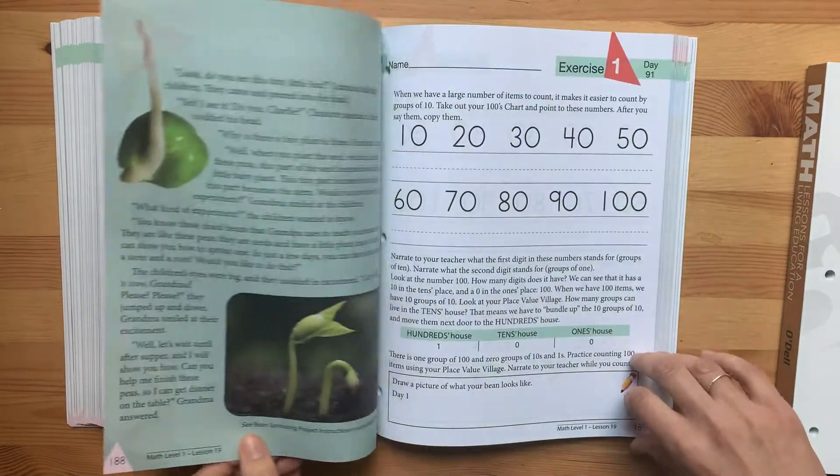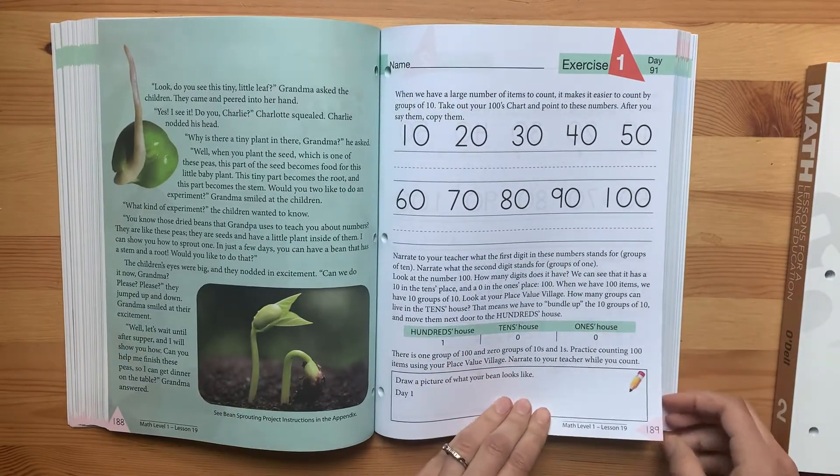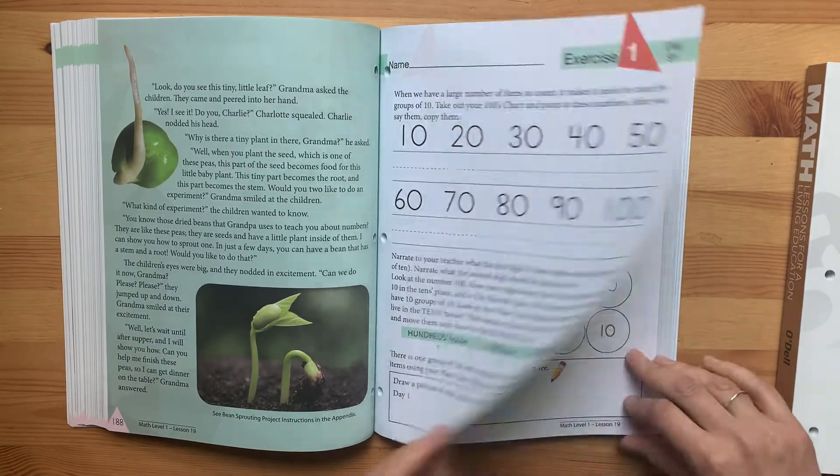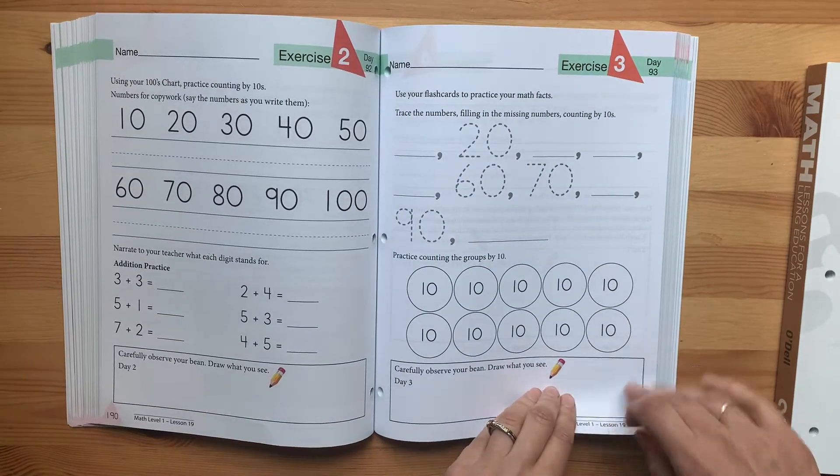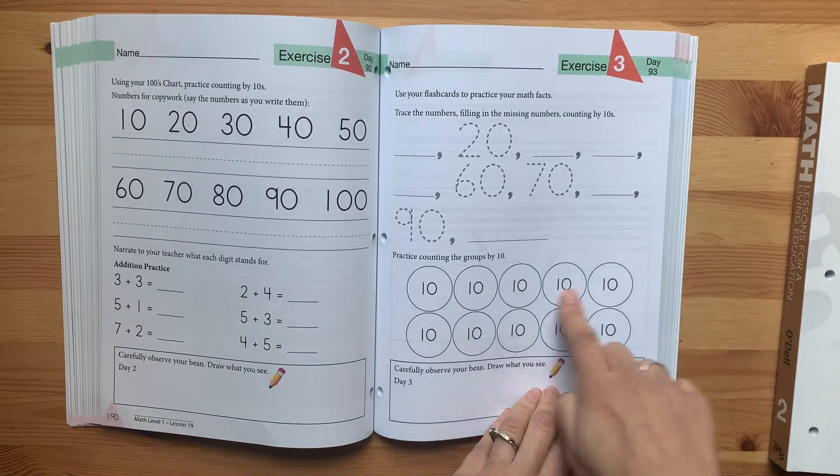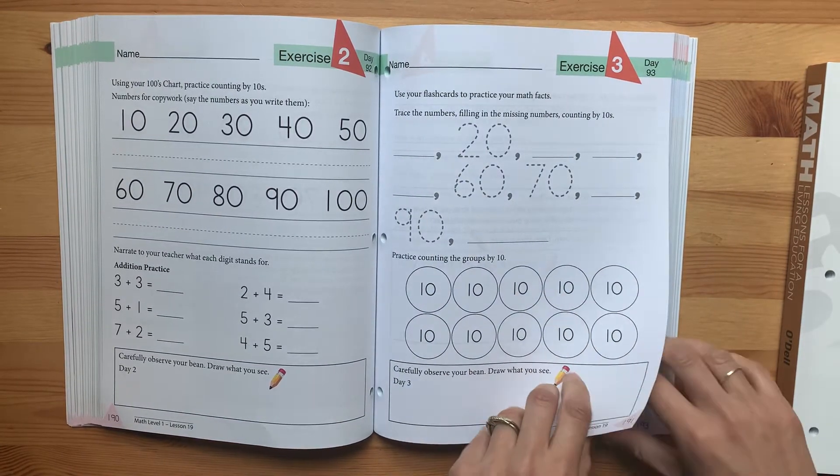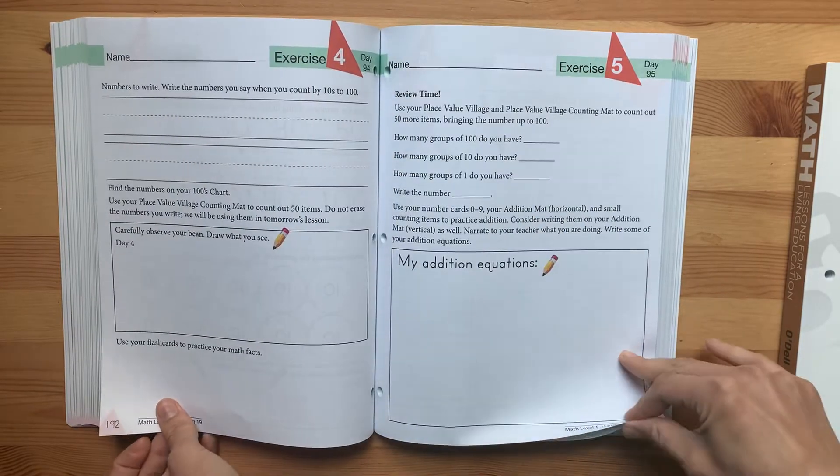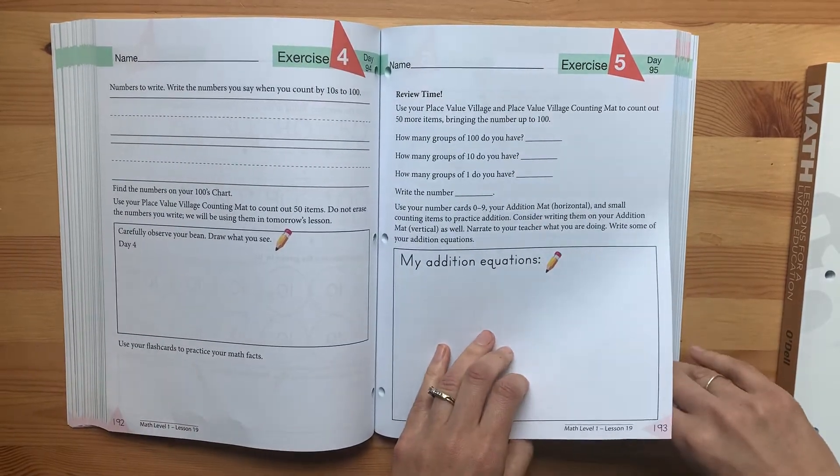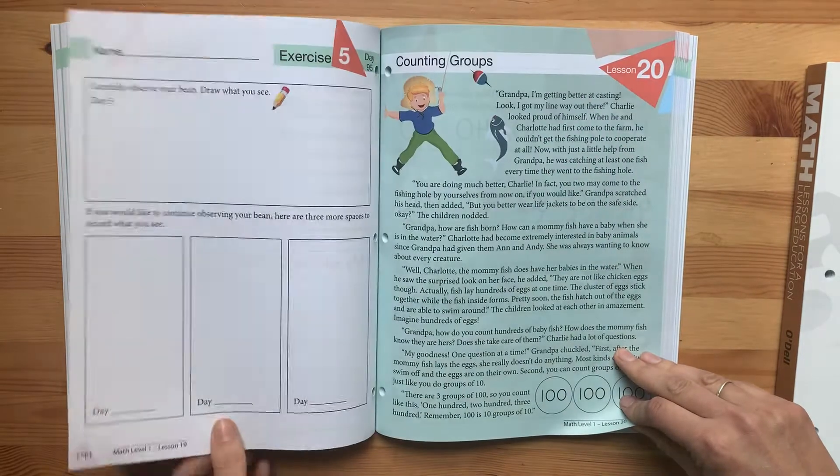Getting into the 50s. More stories. More counting and grouping by 10. Tracing numbers. Addition. More place value village.